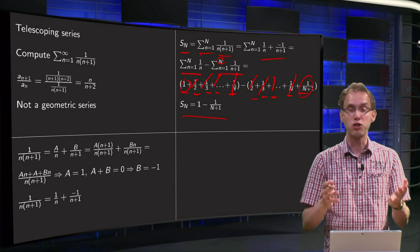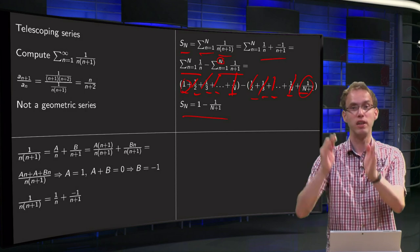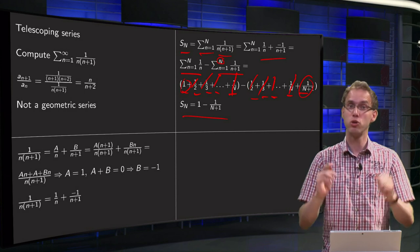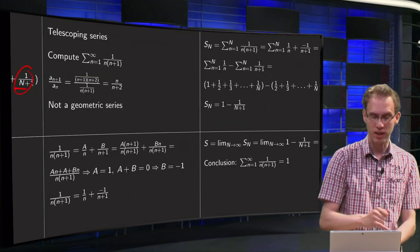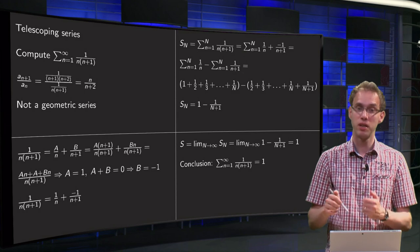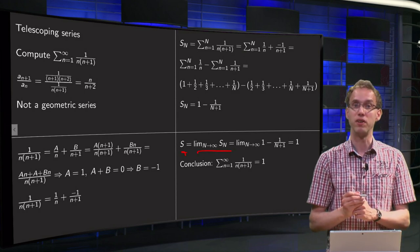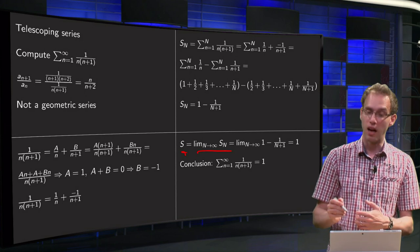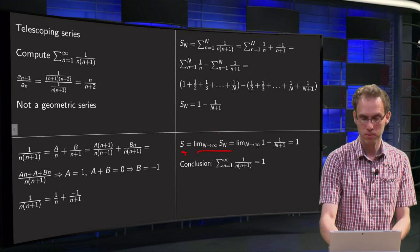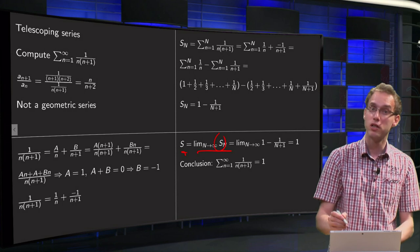This is what we call a telescoping series. Terms mutually cancel out, and we are left with only two terms. That means that we can compute the sum of the series, because this S is the limit capital N to infinity of S capital N. We know now this partial sum, that is always the hard part. We know it now, so we can use that.